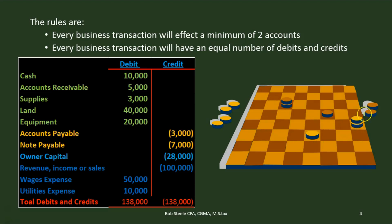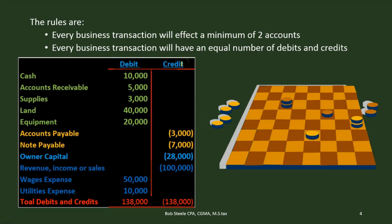A game of checkers is on a board. We have different colored pieces and different colored squares, and we move those pieces in accordance with a set of rules. The set of rules for accounting are that we have a T-account — that's our board. The rules of the game are that debits are on the left hand side, credits are on the right hand side, and debits and credits aren't inherently good or bad. They're just like the black and white squares on the board — they just happen to be debits on the left, credits on the right.